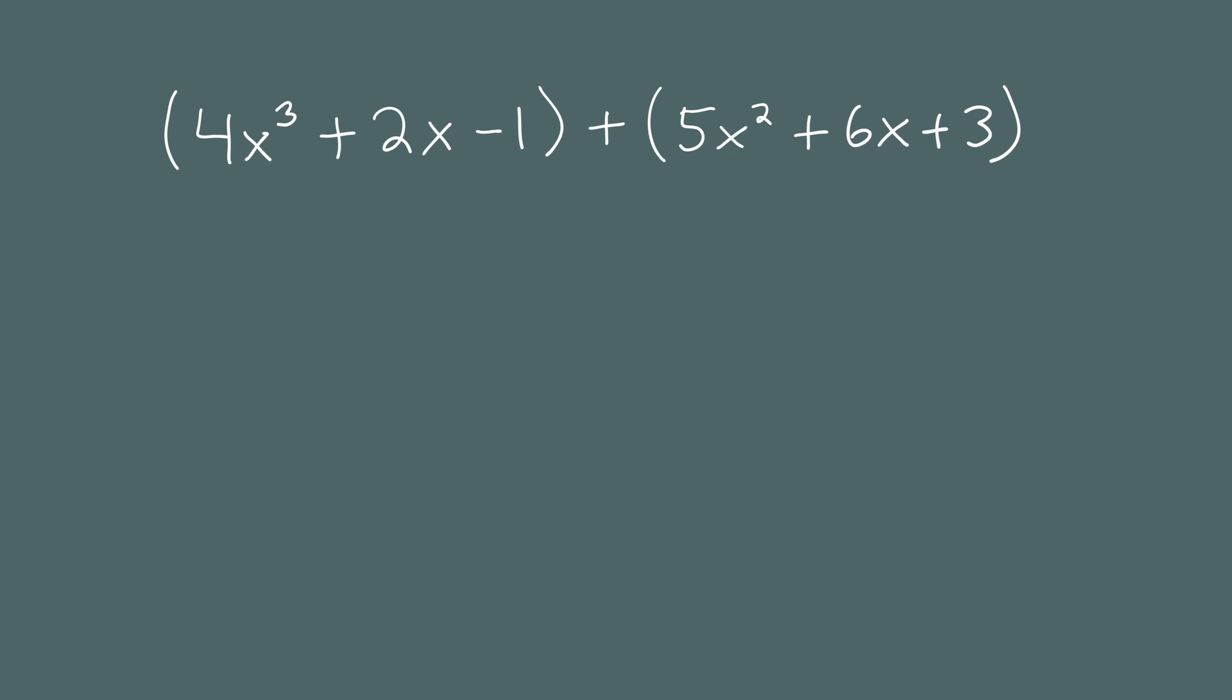Once again, we want to combine like terms. This time, we'll write one polynomial above the other and line up like terms. Let's write the first polynomial. For x cubed, there's no x squared term so we'll leave a gap. Then plus 2x and minus 1. On the next row, we write the next polynomial. 5x squared goes underneath the gap because there's no like term in the top polynomial. The 6x goes below the 2x, and the plus 3 goes below the minus 1.